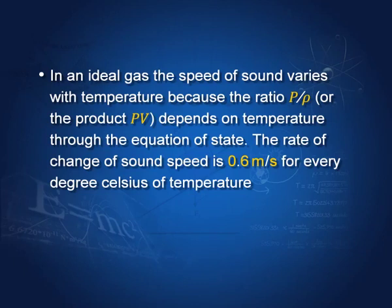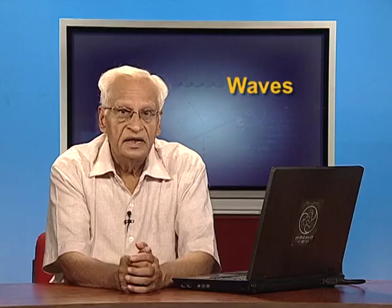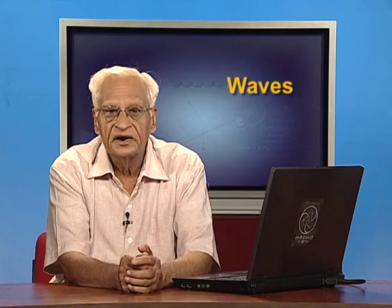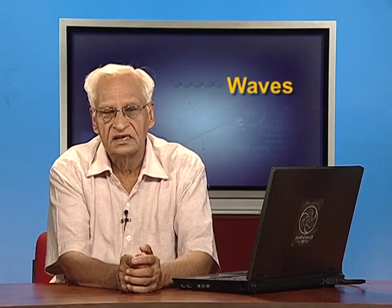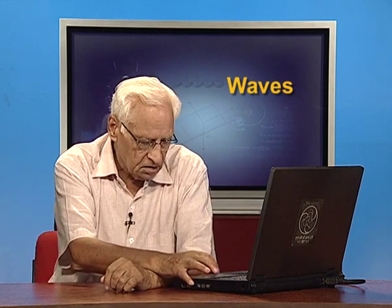The rate of change of sound speed is 0.6 meters per second for every degree Celsius of temperature. In an ideal gas, the speed also varies with gamma. In air, speed is determined mainly by temperature and to a small extent by humidity. At a given pressure, speed increases slightly with humidity as water vapor reduces the air's density, and velocity is inversely proportional to the square root of density.